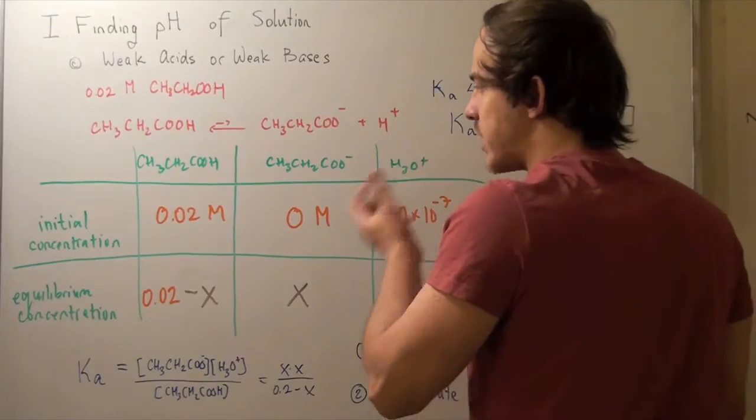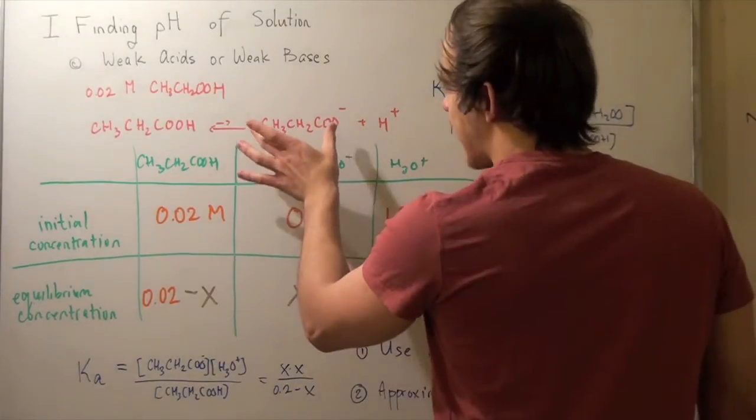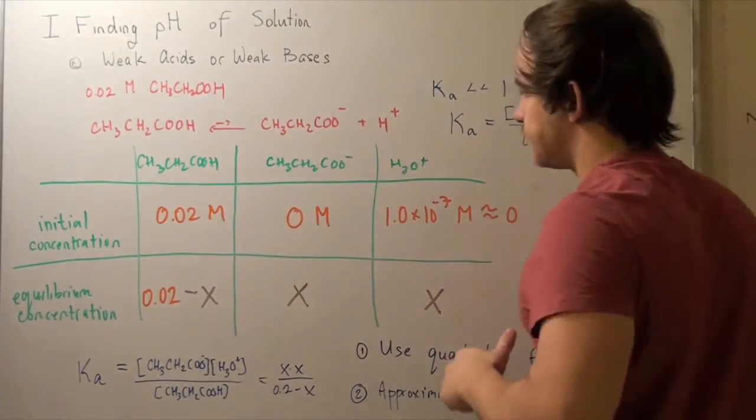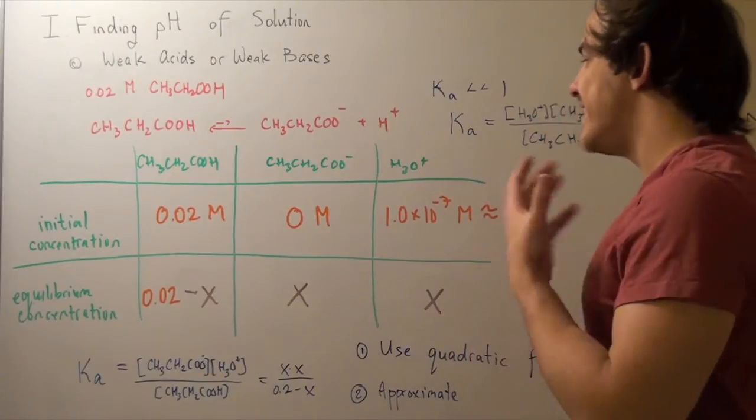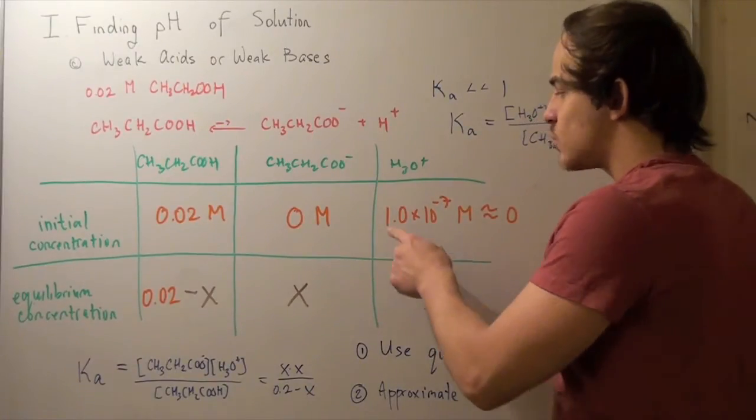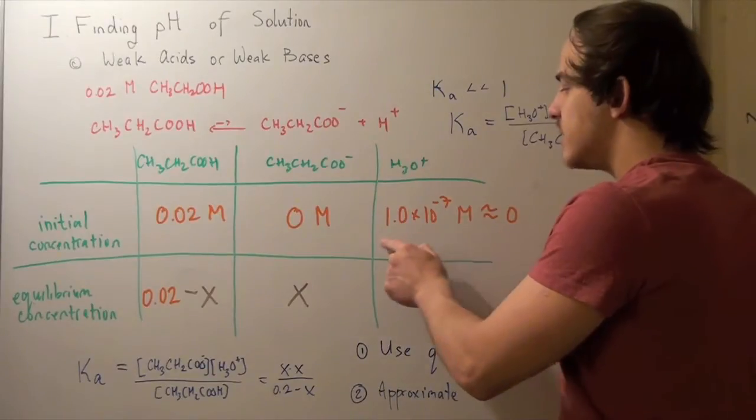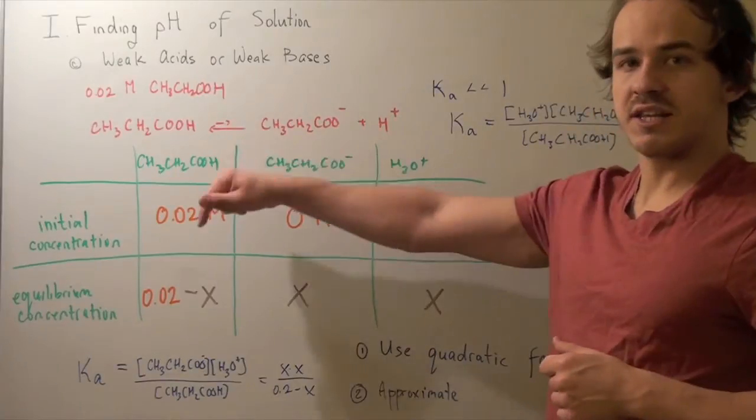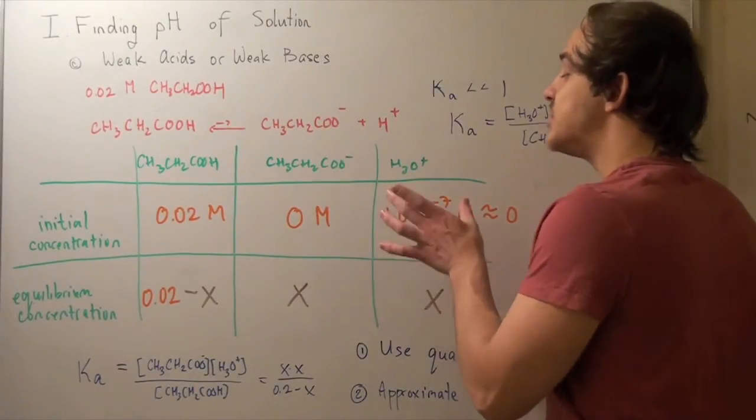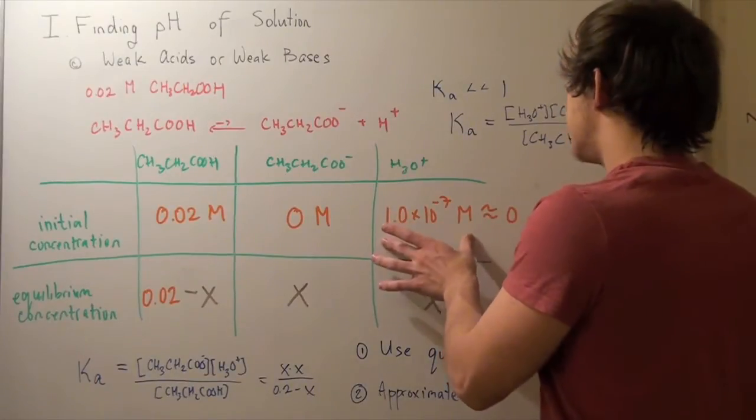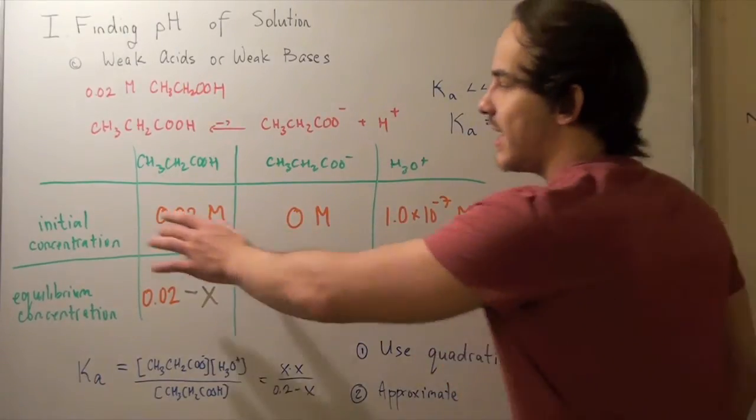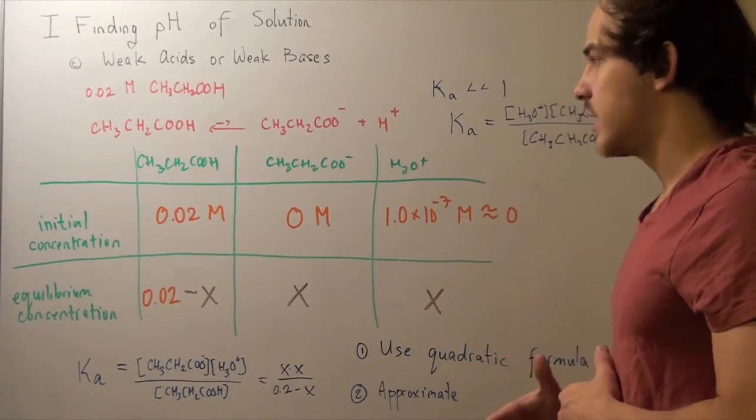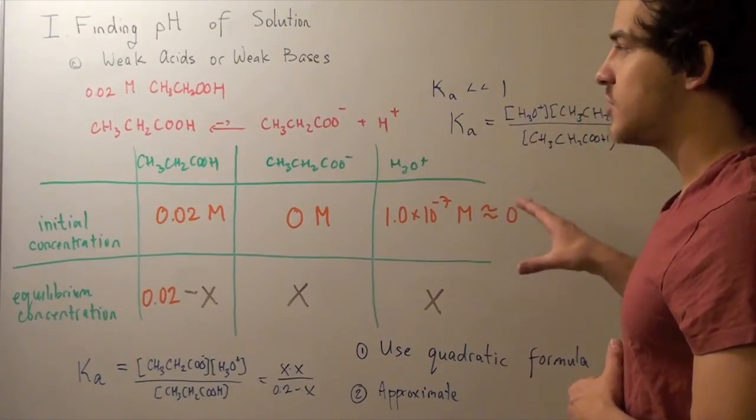What's our concentration in the initial condition of our acetate ion? Well, it's zero. Initially, none of this is dissociated. What about H3O+? Well, initially, in water, it's 1.0 times 10 to the negative 7. This is due to the auto-ionization of water. If you're confused about that, check out the link below. But this number is so small that we can approximate this to be zero. So at initial conditions, our concentration of hydronium is approximately zero. That's the first approximation we must make.